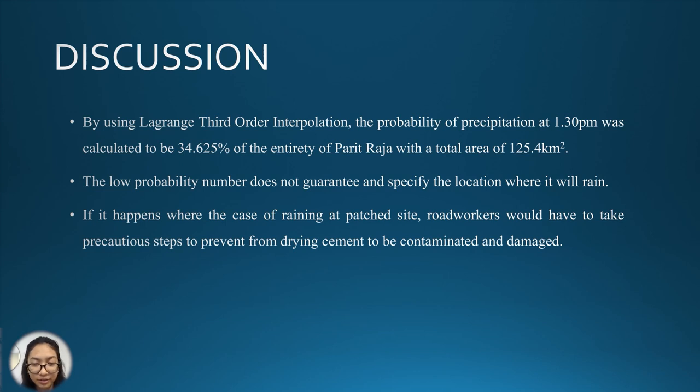After using Lagrange interpolation, in which this case we've opted with the third order, we've calculated the probability of precipitation at 1:30 pm specifically was 34.625% of the entirety of Batu Pahat with a total area of 125.4 km². The low probability number, although it does not guarantee and specify the location where it will rain.